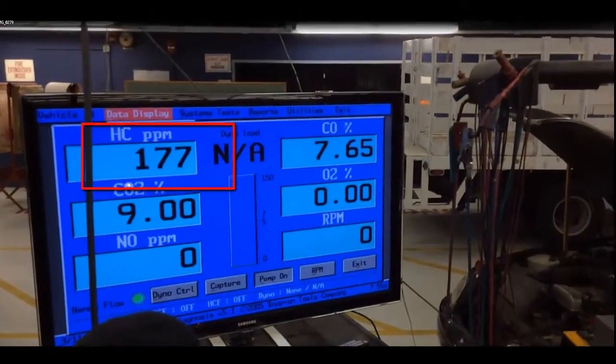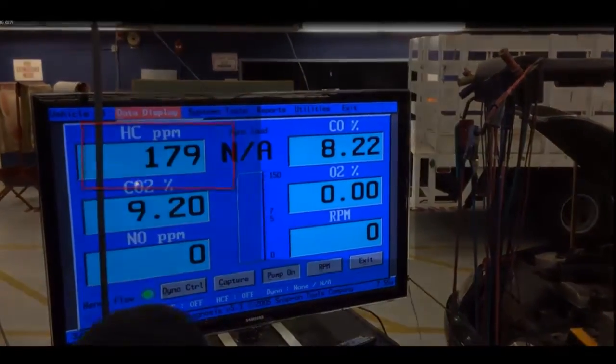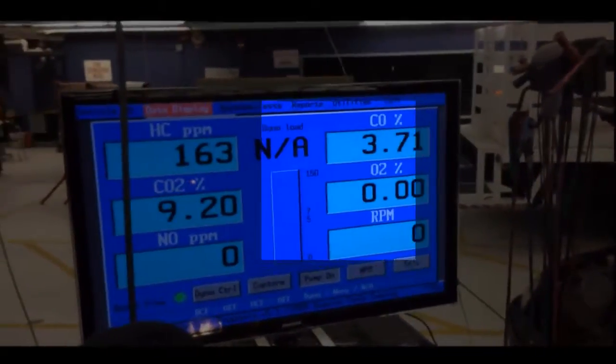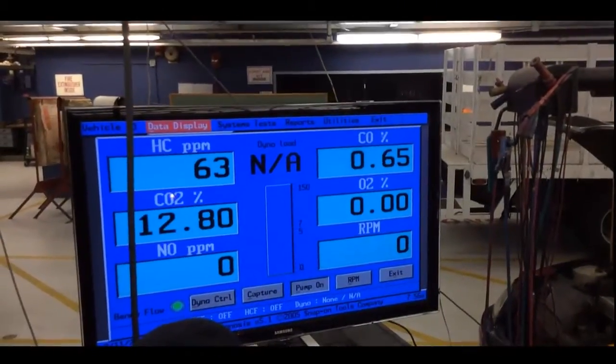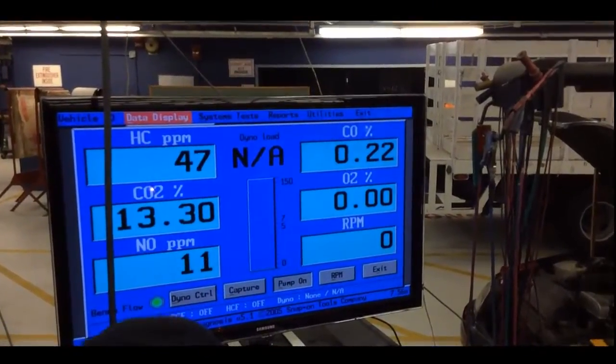Plus it's starting to fall out, causing HCs to go up. Now look at the CO. High CO, low O2 in a rich running car. CO2 low indicates the car's running poorly.